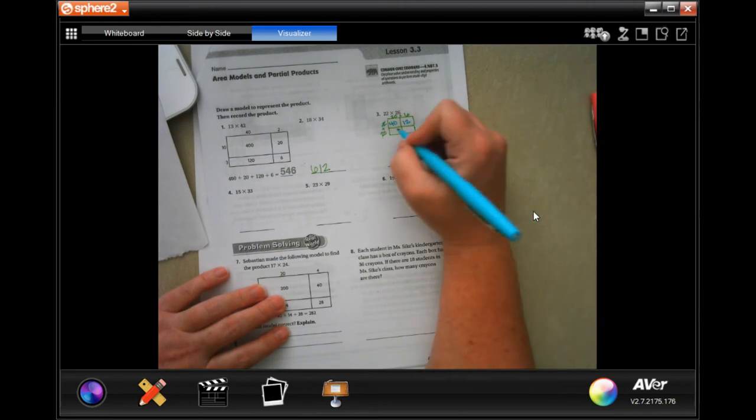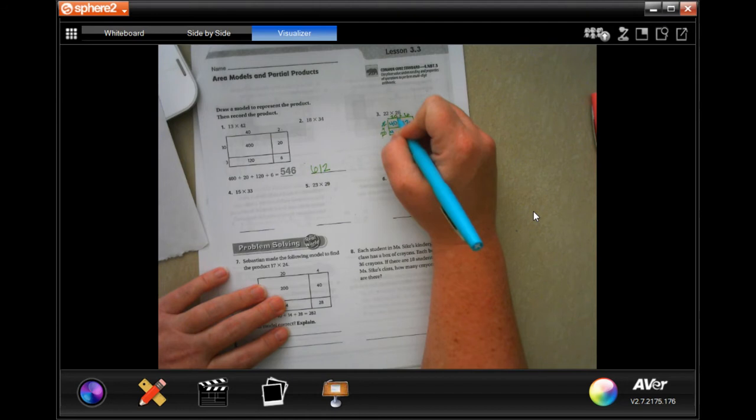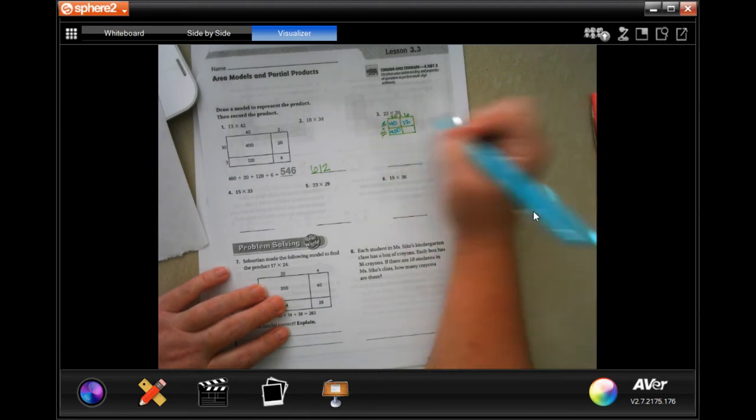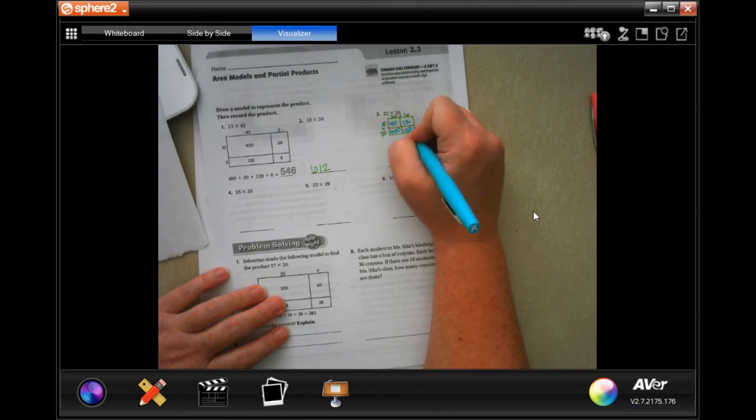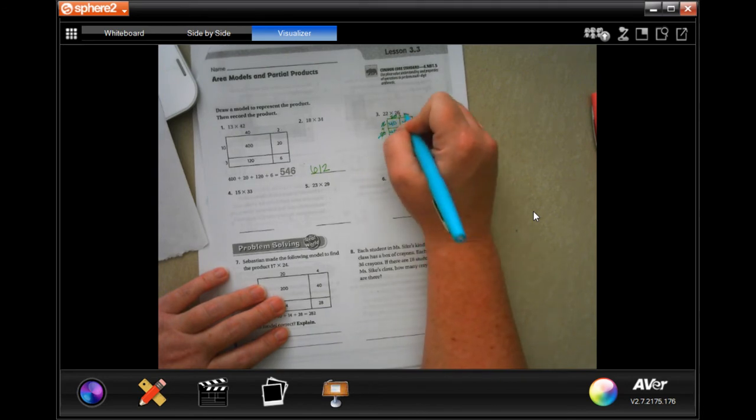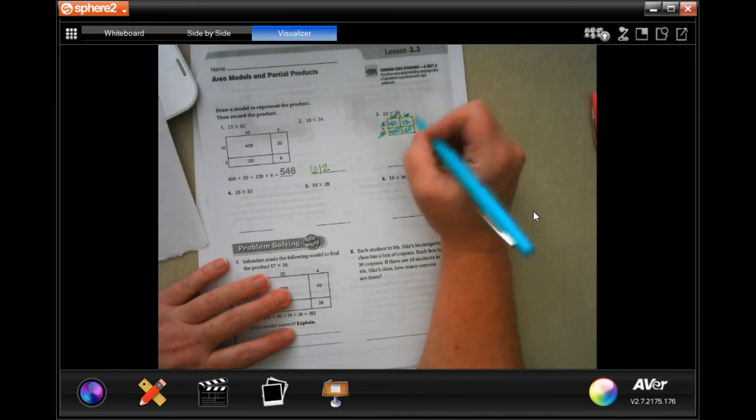20 times 20. Well, 2 times 2 is 4 and then I have to add in those two zeros. And now 20 times 6. 6 times 2 is 12 and then I have to add in that one zero. So now I'm done with that. All done. All my boxes are filled in.